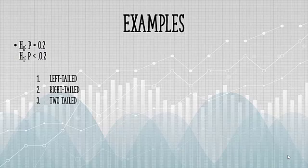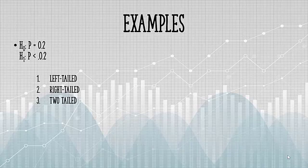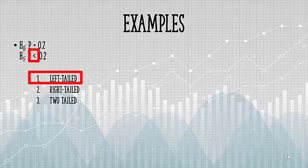So our null is P equals 0.2, and the alternate is P is less than 0.2. We're only interested in the sign of the alternate hypothesis. It's less than, and that's a left-tailed test.